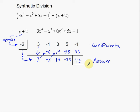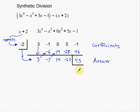That's the synthetic division process. So let's recap. I start with this 3 and bring it down. Then I take negative 2 times 3 to get negative 6. Add down to get negative 7. Then negative 2 times negative 7 to get positive 14. Add those numbers down. Then negative 2 times 14 to get negative 28. Add down to get negative 23. Then negative 2 times negative 23 for a positive 46. Then add those numbers down to get 45. Now I've done the entire process — it's add down, multiply up. Once you have everything written out, it's actually kind of simple.